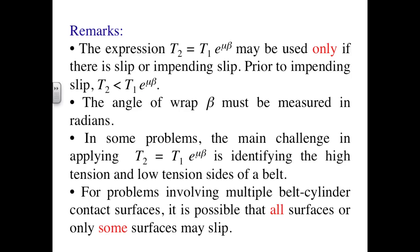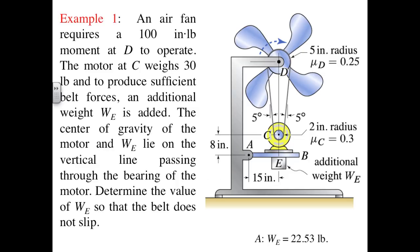It is important to keep in mind that the relationship T2 equals T1 times e to the mu beta represents the largest possible disparity between the tensions on either side of the pulley. It assumes that slip is occurring or impending everywhere along the angle of wrap. In problems involving multiple belt-cylinder contact surfaces, not every surface may be on the threshold of slip. Here we have an example involving two points of engagement, where a motor at C is driving a pulley that transmits torque to an air fan at D.